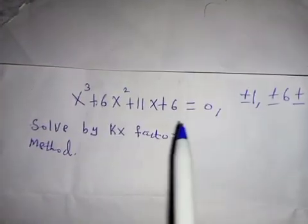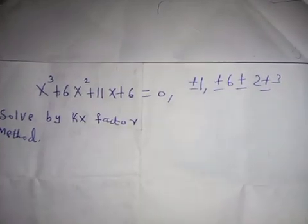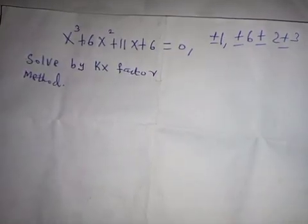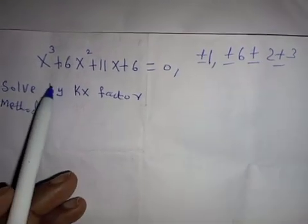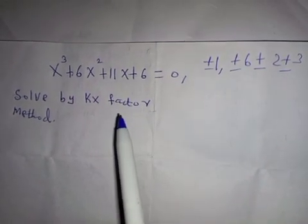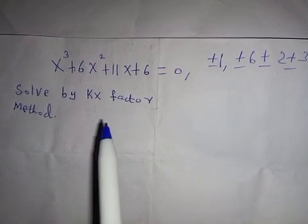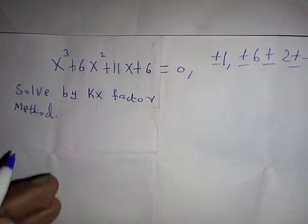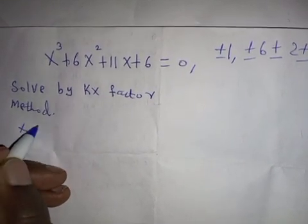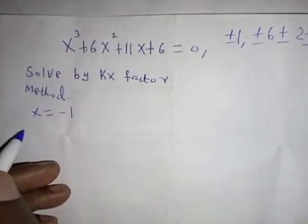The first thing we do is attempt to see which of these is a factor of the cubic equation. We use trial and error to see which value is a factor. Let's begin by trying x is equal to negative one.